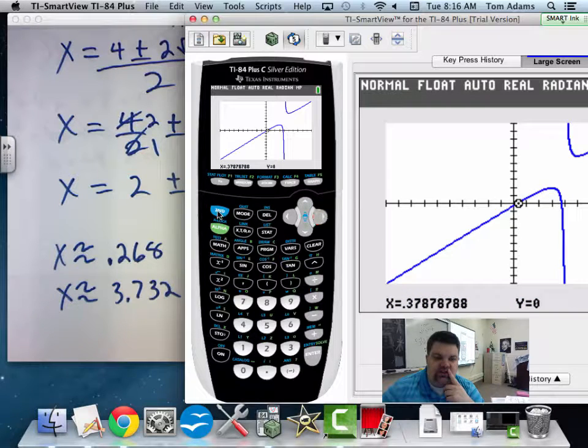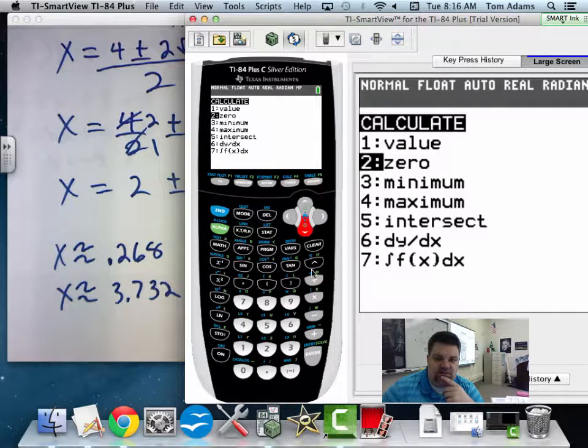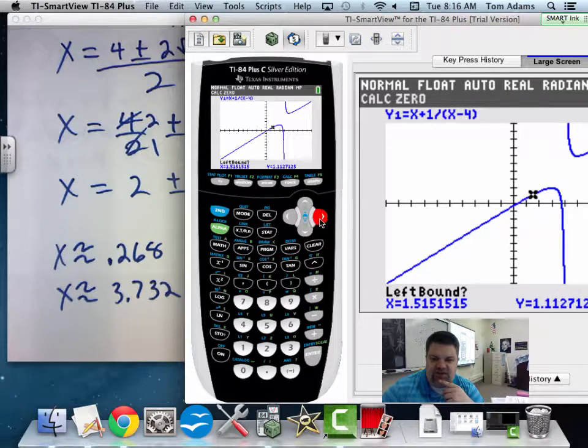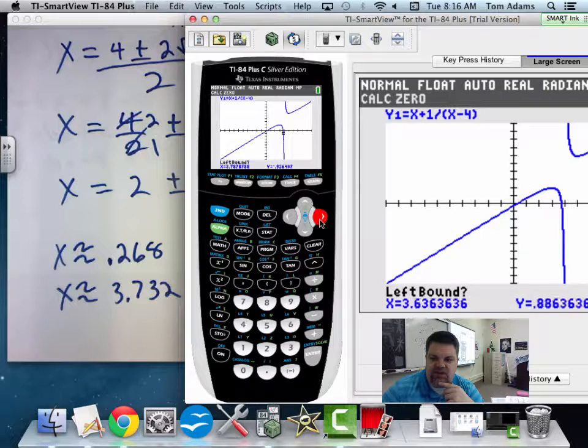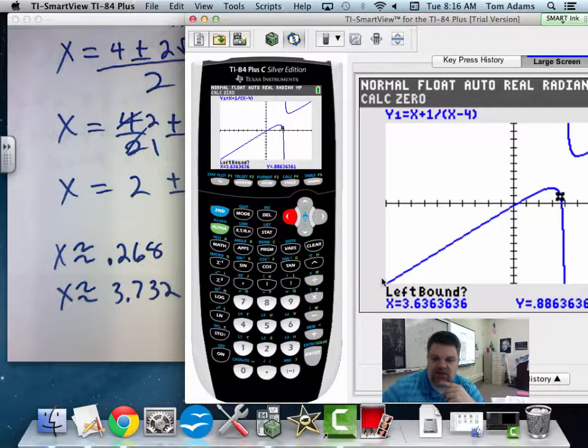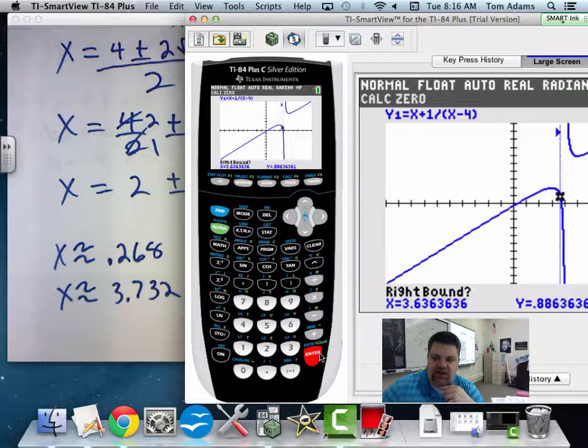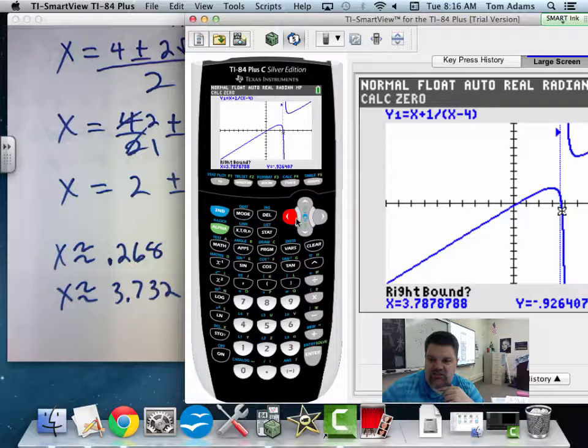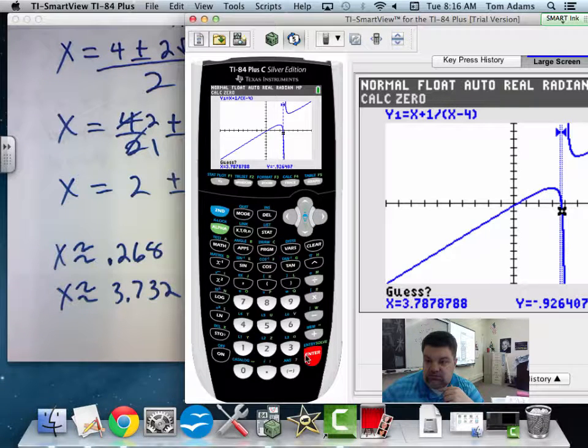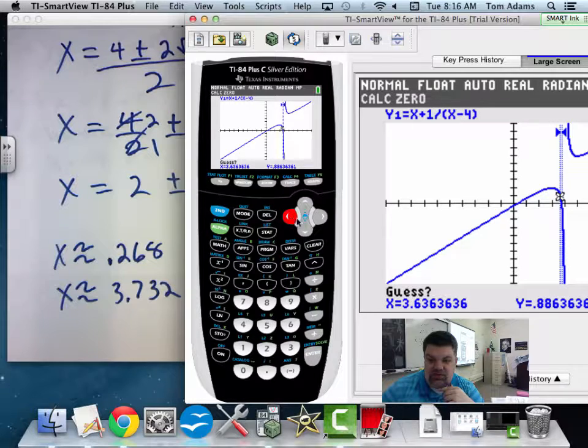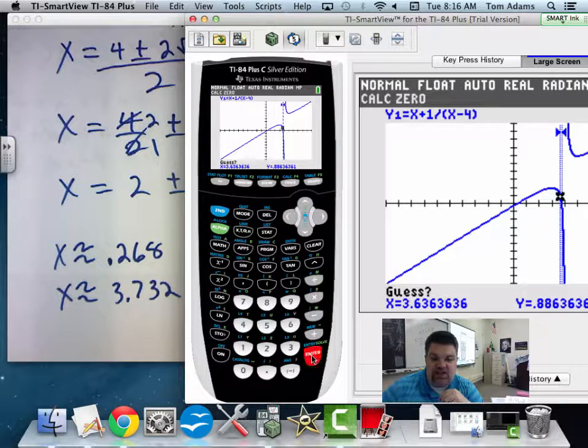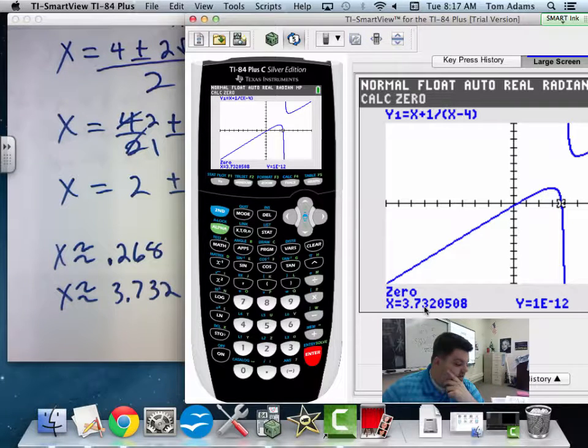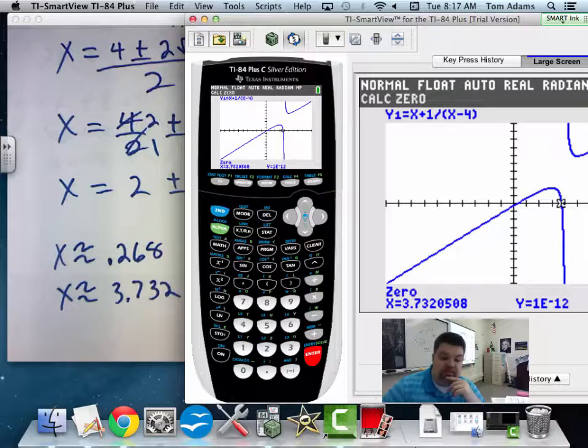So now let's do another 0, shall we? So if we say 2nd trace. And now I'm going to come a little bit to the left again. Why do I know that I have to be to the left? Because the calculator says right here, left bound question mark. Hit enter. Go a little bit to the right. Hit enter. And somewhere in the middle is where that should be. But that's about as close as I can get. So I'm just going to hit enter. 3.732. That's what I said, right? OK. That's it. Any questions?